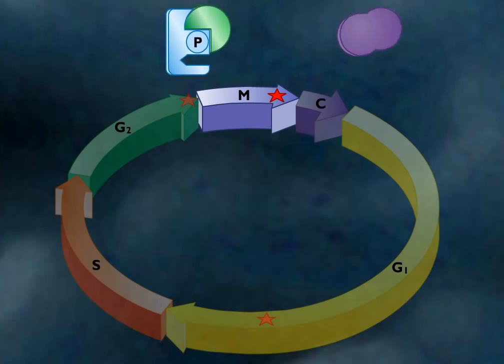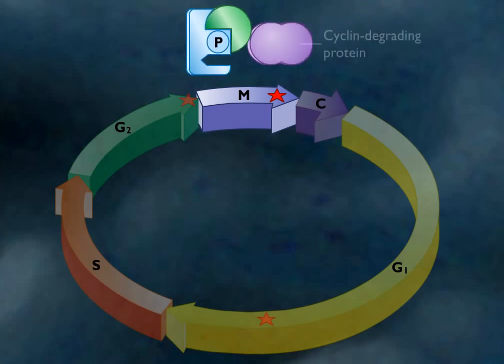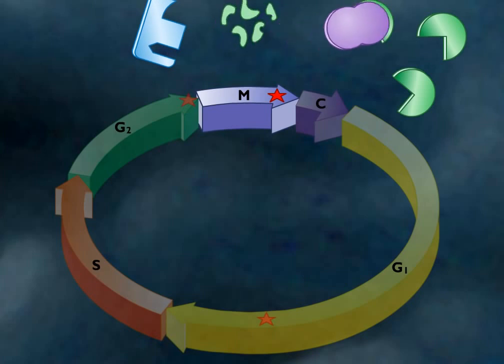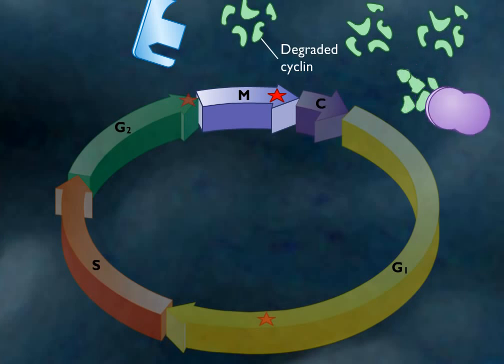One of many functions of MPF is to activate proteins that destroy cyclin. As mitosis proceeds to the end of metaphase, CDK levels stay relatively constant, but G2 cyclin is degraded, causing progressively less MPF to be available and initiating the events that end mitosis.